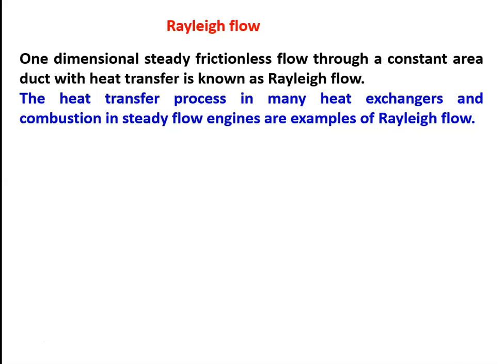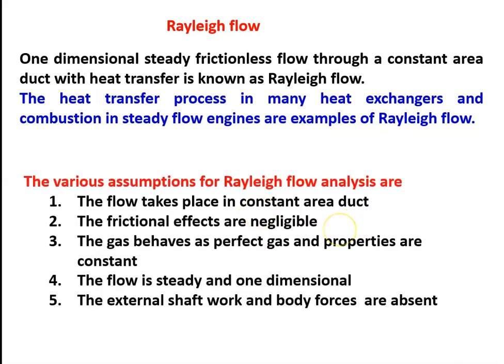One-dimensional steady frictionless flow through a constant area duct with heat transfer is known as Rayleigh Flow. Heat transfer processes in many heat exchangers and compression in steady flow engines are examples of Rayleigh Flow. The assumptions for Rayleigh Flow analysis are: flow takes place in a constant area duct; frictional effects are negligible; the gas behaves as a perfect gas with constant properties; the flow is steady and one-dimensional; and external shaft work and body forces are absent.